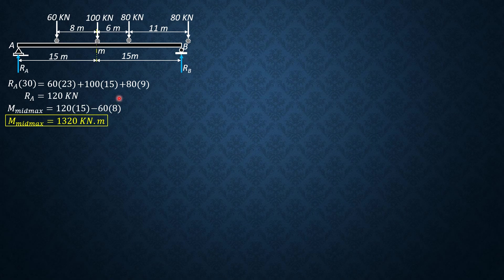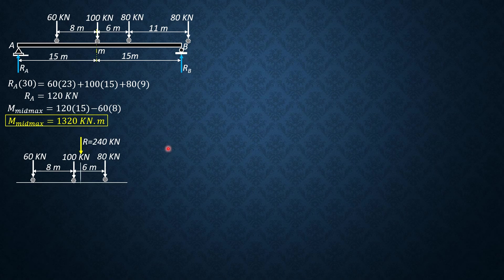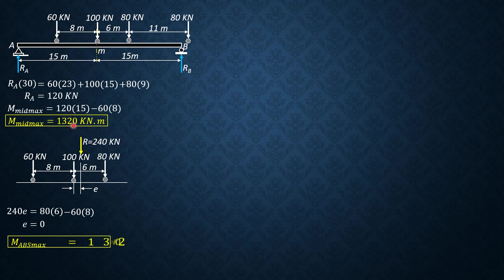For absolute maximum moment, the resultant R is 60 plus 100 plus 80, which is 240 kN. The distance E between R and the 100 kN load is found using Varignon's theorem: 240 times E equals 80 times 6 minus 60 times 8. Since E is 0, the resultant coincides with the 100 kN load position. Therefore, the absolute maximum moment also equals 1320 kN·m.